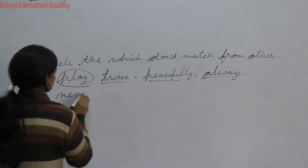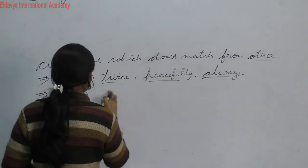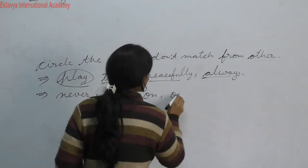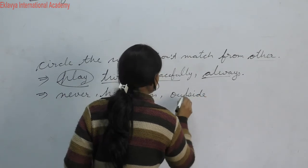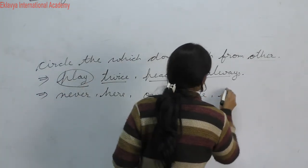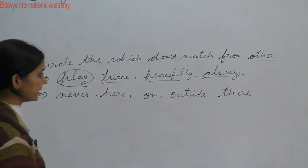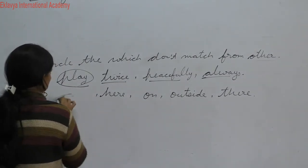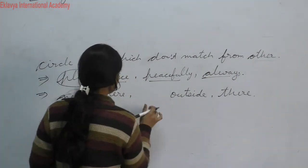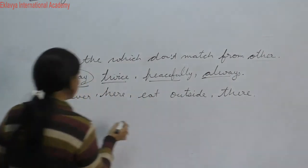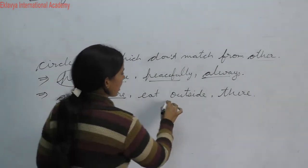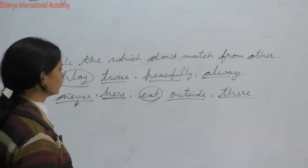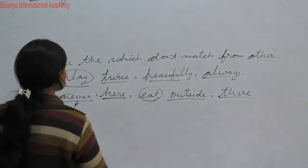Another example: never, here, outside, and there — but suppose the word eat also appears. You know very well: never is an adverb, here is an adverb, outside is an adverb, and there is also an adverb. Eat is not an adverb, so you have to circle it — circle the word that does not match.